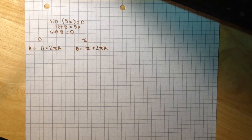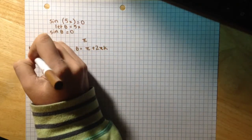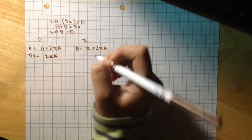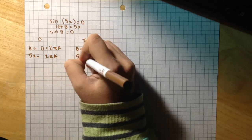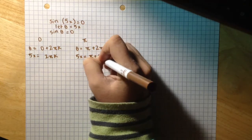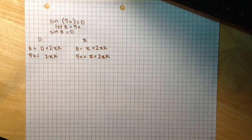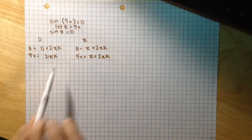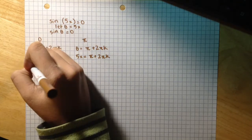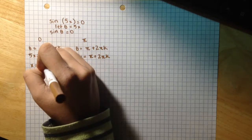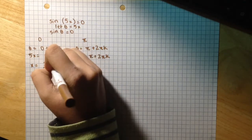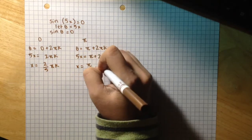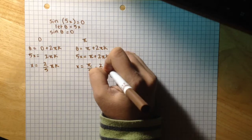Now let's substitute 5x back in here. 5x equals 2πk, and 5x equals π plus 2πk. And to isolate x on both sides, we'll divide both sides of the equation by 5. So x equals 2/5 times πk, and x equals π/5 plus 2/5 πk.